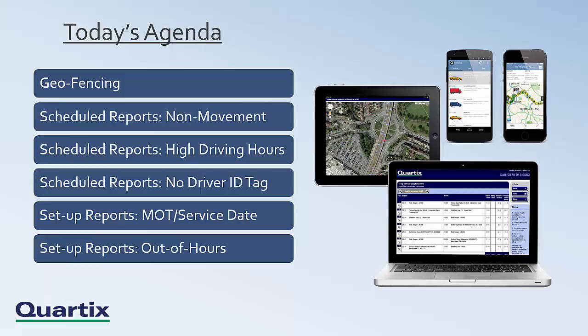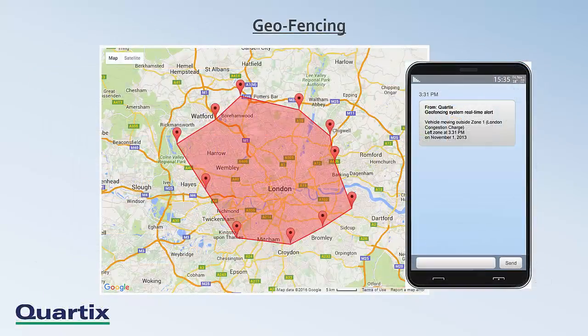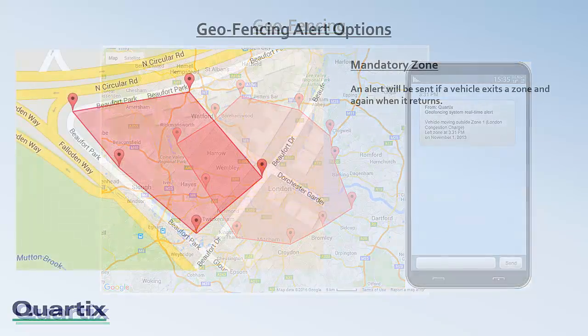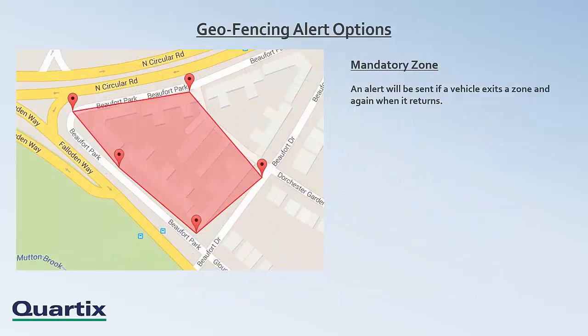Let's get started with the Quartix geofencing feature. A geofence is a virtual perimeter covering a specific location or geographical area. In setting up a geofence alert through the Quartix system, you will be able to live track if and when vehicles are travelling into or out of a specified location. Let me talk you through the different options.